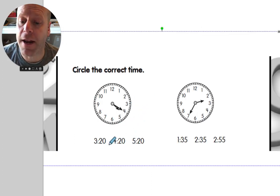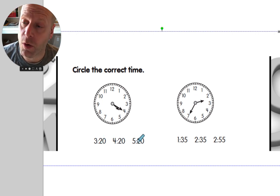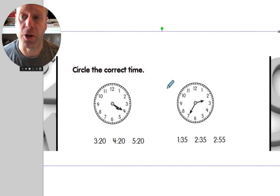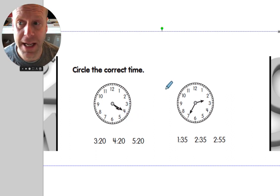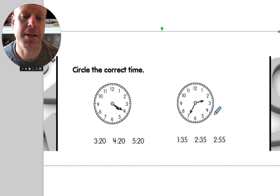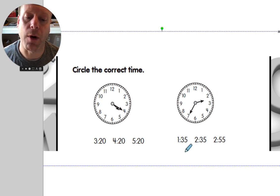Here you have a clock and three times to choose from. Is this 3:20, 4:20, or 5:20? Use the hands to give you the clues. Remember the short hand is the hour, the longer hand is counting the minutes. Same for the second clock — look at the clock, look at the time, choose the hour and the minute that matches.